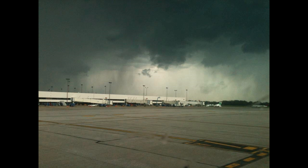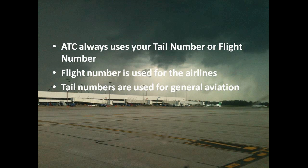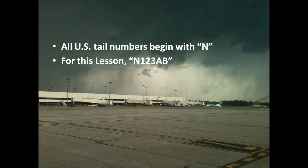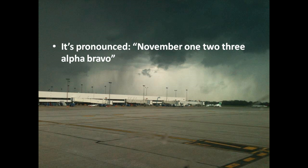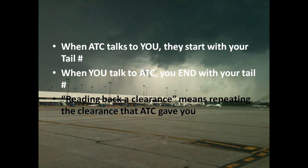Whenever air traffic control talks to you, they're going to use either your tail number or your flight number. All planes in the U.S. have what's called an N number on the tail — it's basically the registration and identification number for that plane. For this lesson, our tail number is November 123 Alpha Bravo. If we were an airline, ATC would address us by our flight number — like Delta 1234 — instead of the tail number.